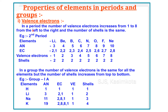Now let's see how valence electrons change in a period. In a period, the number of valence electrons increases from 1 to 8 from left to right, and the number of shells remains the same. The atomic number changes by 1 unit, so the electronic configuration also varies by 1 electron. When you consider the second period, the elements are lithium, beryllium, boron, carbon, nitrogen, oxygen, fluorine, and neon.